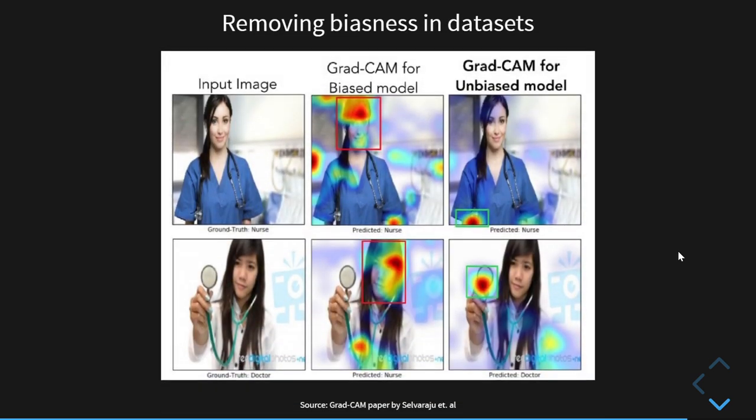GradCam can also be used to remove biasness from datasets. Here the task was to classify images of nurses from images of doctors. In the bias dataset case, we can see that the network focuses on the face to output its decision. Here we can see that it focuses on the face. If it looks like that the face is more feminine, it says that it's a nurse. And if it's more masculine, it says that it's a doctor. So it is biased in that sense. But when we remove this bias from the dataset, we can see that it looks for other features like the white coat and the stethoscope to make its prediction.